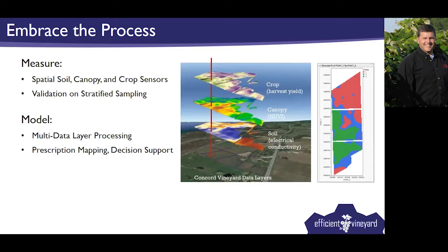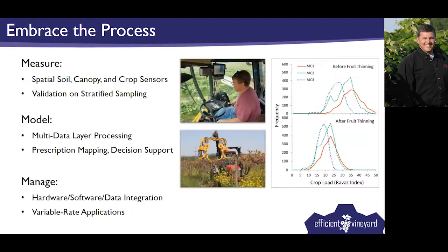Then we model. I look at modeling as two things: data modeling, where we use multi-data layering to understand at any point in the vineyard what the soil is like, what the canopy is like, what the crop is like, and use that in a crop load balance model. Then there's viticulture or horticulture modeling — am I worried about vine growth, yield components, fruit quality, or all of them? I do a lot of work with vine balance, looking at leaf area to fruit weight ratio and the yield-to-pruning-weight ratio.